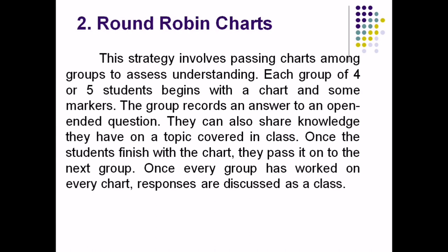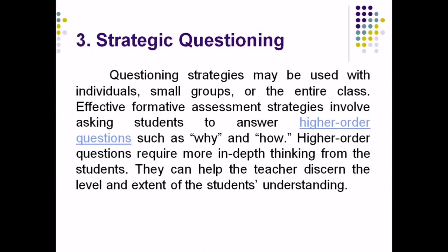The second one is the round robin charts. This strategy involves passing charts among groups to assess understanding. Each group of four or five students begins with the chart and some markers; the group records an answer to an open-ended question or shares knowledge they have on the topic covered in class. Once the students finish, they pass the chart to the next group. Once every group has worked on every chart, responses are discussed as a class — it requires group effort among students.